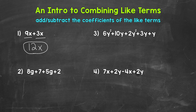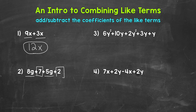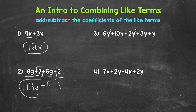Let's move on to number two where we have 8g plus 7 plus 5g plus 2. Are there any like terms that we can combine in order to simplify this expression? Yes — we have 8g and 5g. Both of those terms have that variable of g. And then we have constant terms, 7 and 2. I'll box in the constant terms to separate them from the 8g and the 5g. Now we can combine like terms. We have 8g plus 5g — that gives us 13g. And then we have 7 plus 2 — that gives us 9. So we end up with 13g plus 9, and that's our simplified expression.